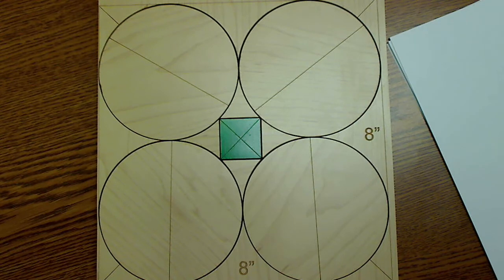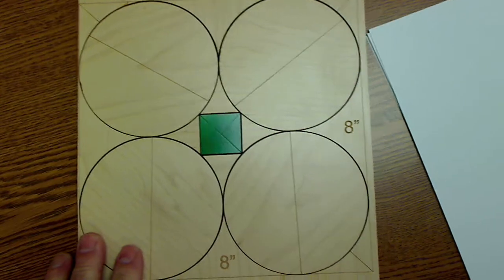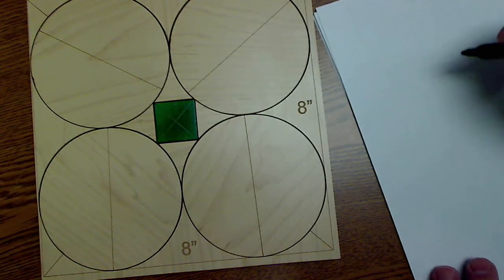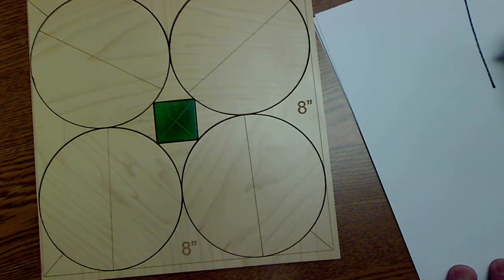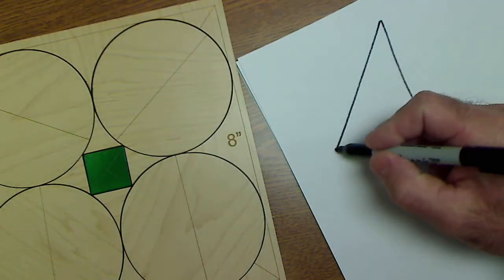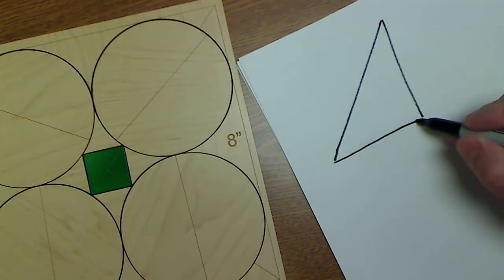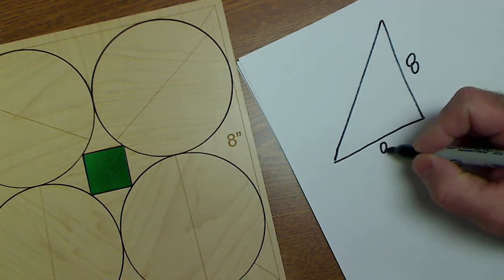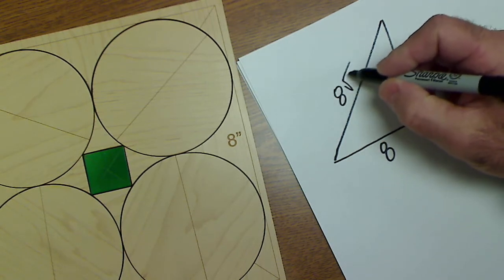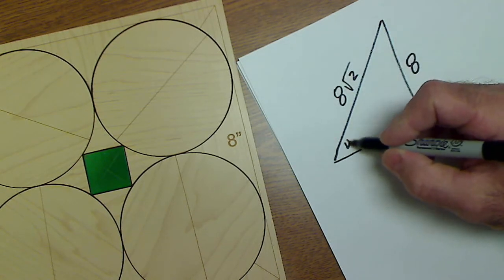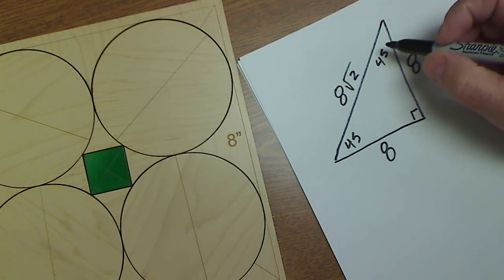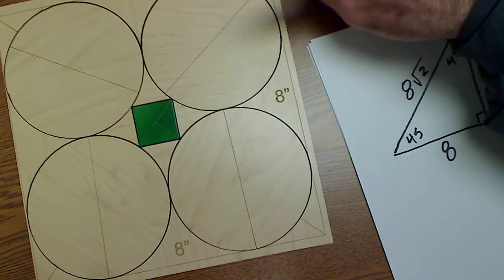This is kind of a hard one but it's a good review of isosceles right triangles. So if I'm trying to figure this out, what I have here is I can figure out this diagonal right here. If this is half the square eight and eight, then this right here is eight root two because this is 45, 90, and 45. So the diagonal all the way across here is eight root two.